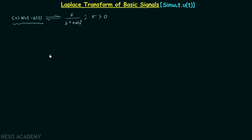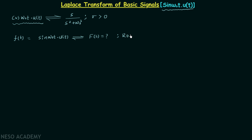In this lecture we will calculate the Laplace transform and the region of convergence of sin(ω₀t)·u(t). So our time domain signal f(t) is equal to sin(ω₀t) multiplied by u(t), and we are required to calculate its bilateral Laplace transform F(s) and the region of convergence. We will follow the same process as the previous lecture: first we will write sin(ω₀t) in terms of complex exponentials.